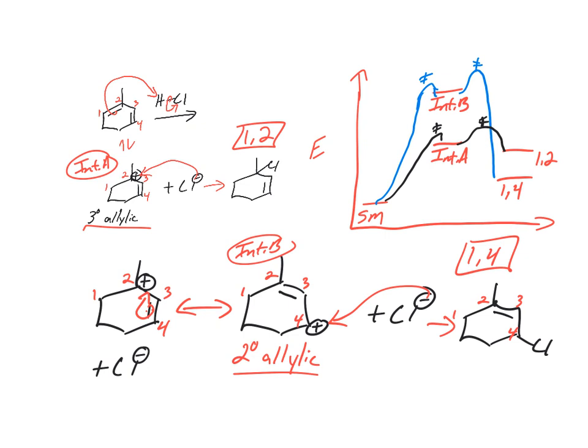The kinetic one is the 1,2. Gets to the lower energy intermediate but then to the higher energy product. So when we think about these reactions, we want to think about conditions. If we ran the reaction cold, what product would we most likely make? If we ran the reaction cold, we'd make the 1,2, the kinetic product. Because it comes from the lower energy transition state and also the lower energy intermediate. If we heat it up a bunch, what product should we make? Probably the 1,4.